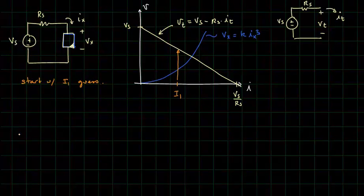And then we will calculate a voltage V2, which is going to be the voltage on the load line corresponding to that current. So, it will be VS minus RS times I1.